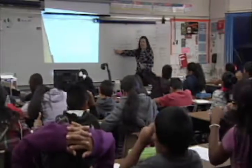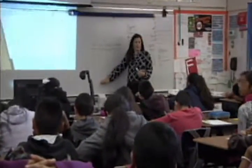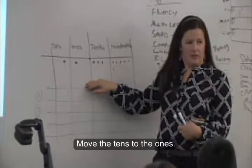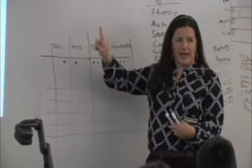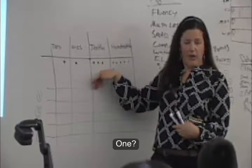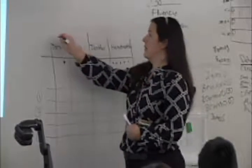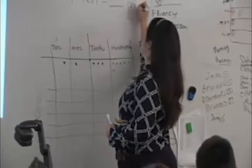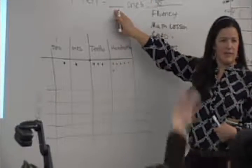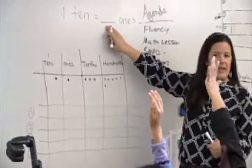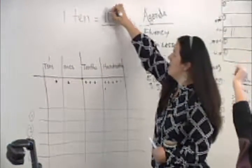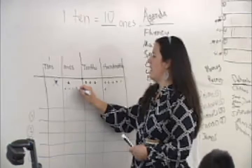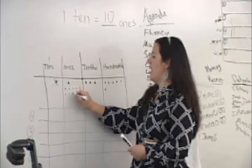The teacher explains: 'I want to share this ten into my four equal groups. Jacqueline, what do I need to do?' The teacher then demonstrates: 'When I move my ten, I did have one ten, but one ten is the same as how many ones?' Students say together: 'Ten ones.' The teacher counts out ten ones: 'One, two, three, four, five, six, seven, eight, nine, ten.'